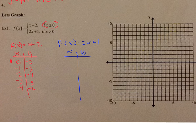Let's graph that. I have (0, negative 2) and that's a solid circle. The rest are solid too: negative 1, negative 3; negative 2, negative 4; negative 3, negative 5; and negative 4, negative 6. And it keeps going, so it'll look like that.